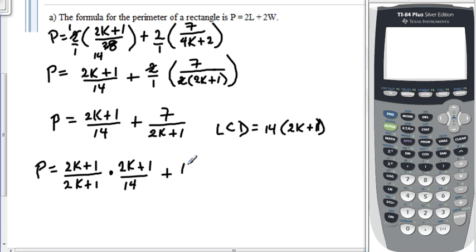We are going to multiply this first expression by 2K plus 1 over 2K plus 1. We're going to multiply by what it's missing, 14 over 14, times 7 over 2K plus 1.